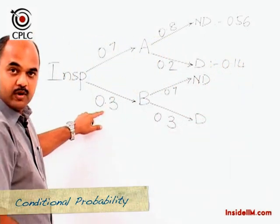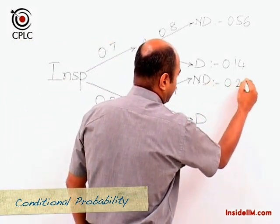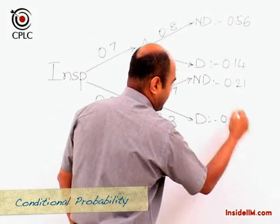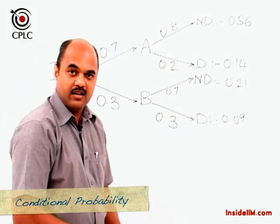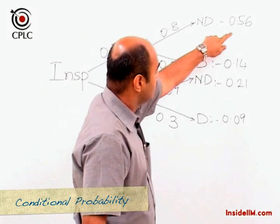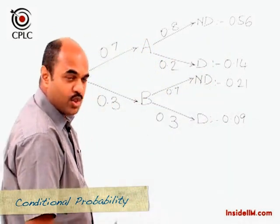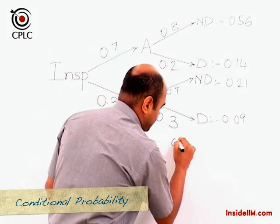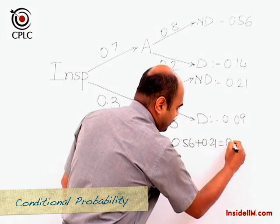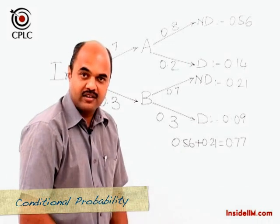If the article is picked up from machine B and it is non-defective, this works out to 0.21, and the defective case from machine B works out to 0.09. We have been told that the article picked up is non-defective, which means we consider 0.56 plus 0.21. So, if the article is non-defective, the total probability is 0.56 + 0.21 = 0.77.